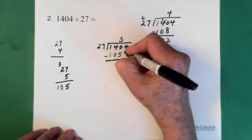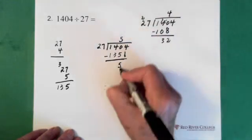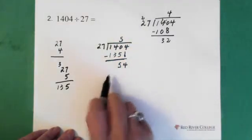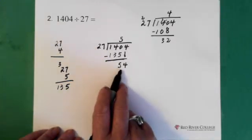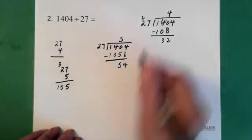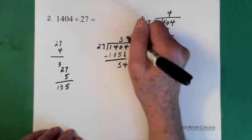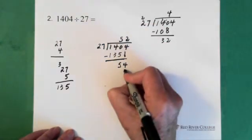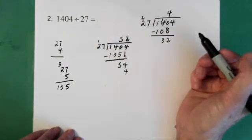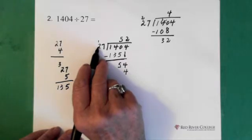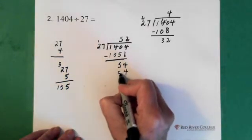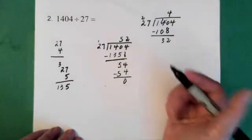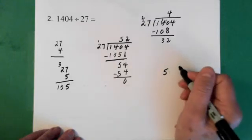As soon as you subtract, you bring down the next number. You bring down the next number and that's a four, which gives us fifty-four. Now we say, how many times does twenty-seven go into fifty-four? Twenty-seven goes into fifty-four twice. We put the two directly above the four. Two times seven is fourteen, so the four goes there. We put the one above the two. Two times two is four. We add the one and that gives us five. We subtract and we get a zero. That tells us we're finished. We have no remainders, so we're done. The answer to this question is fifty-two.